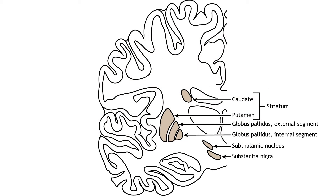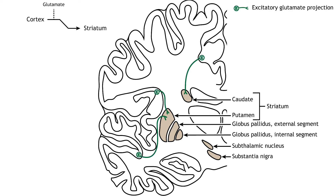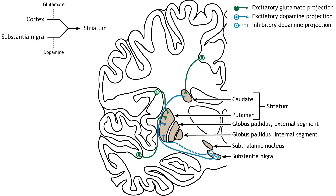The majority of information processed by the basal ganglia enters through the striatum. The principal source of input to the basal ganglia is from the cerebral cortex. This input is glutamatergic and therefore excitatory. The substantia nigra is also a region with critical projections to the striatum and is the main source of dopaminergic input.